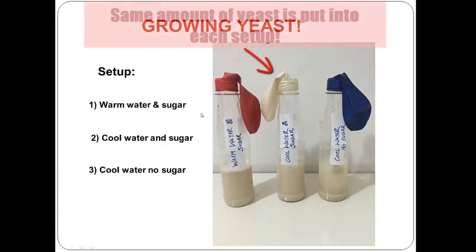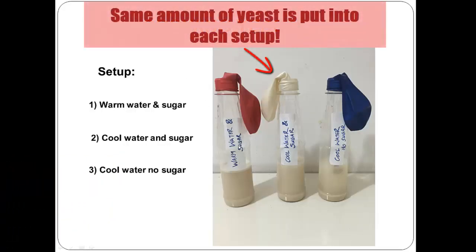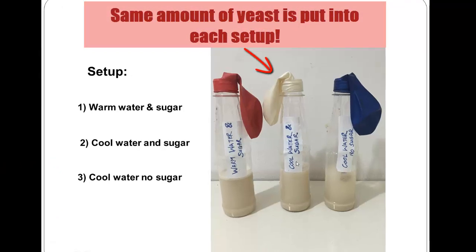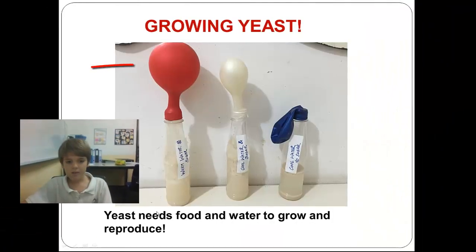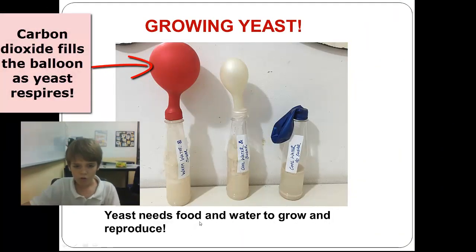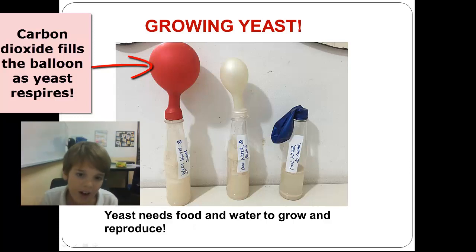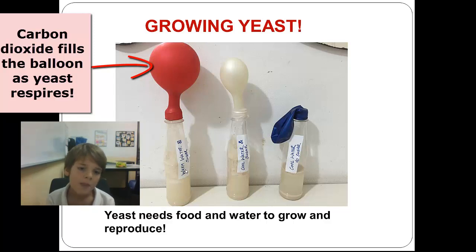Set up. Number one is warm water and sugar. Number two is cool water and sugar. Number three is cool water, no sugar. So, yeast needs food and water to grow and reproduce, which means it needs a sort of food — which is the sugar — and warm water to make it warm.